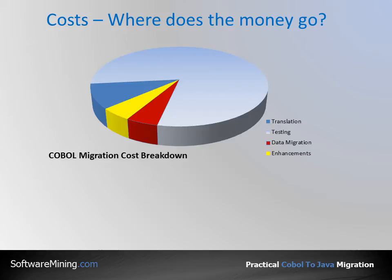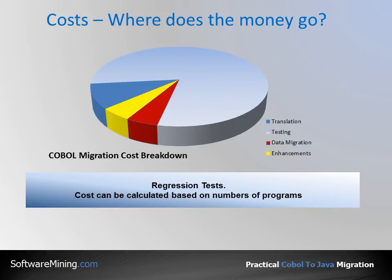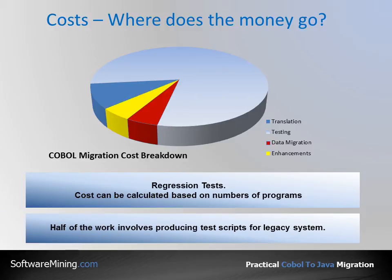So go for the most experienced tool that you can find — and by that I mean a COBOL to Java or C-Sharp translation tool, not a COBOL re-hosting tool which has been updated last month to produce Java. In regression tests, costs can be calculated based on the number of programs. For example, in your organization with your team, it may take two hours to test a batch program. So 500 programs will take 1,000 hours, or roughly six man-months, to test. Also, bear in mind that half of the workload involves producing test scripts for the legacy system, which is a useful activity in itself — it allows you to perform impact analysis after any changes or enhancements.